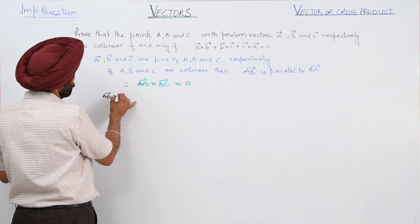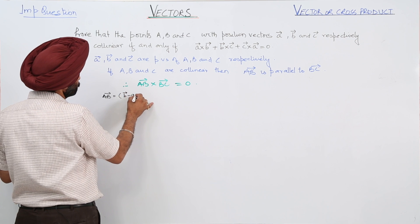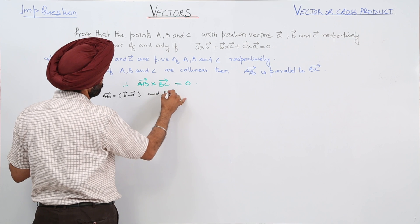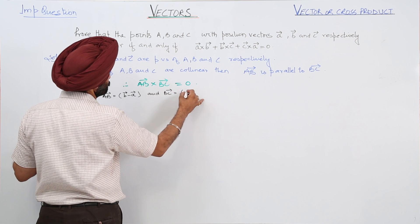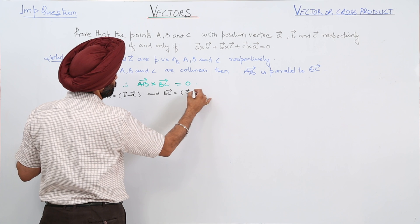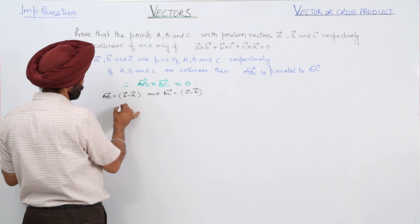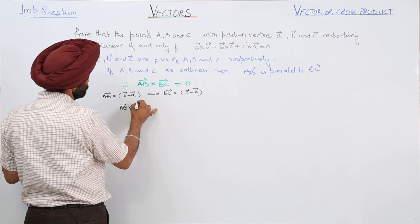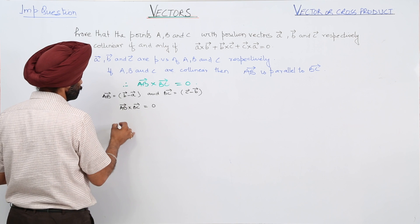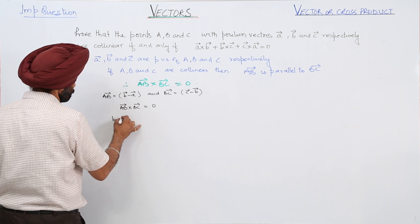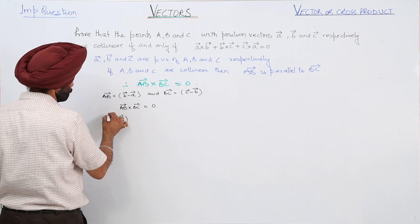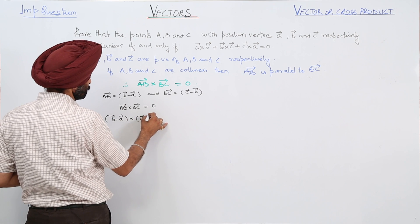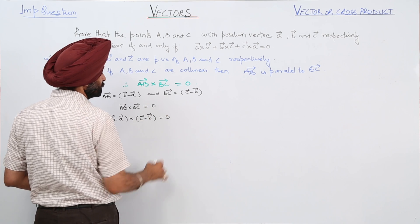Now, vector AB is the position vector of B minus position vector of A, and vector BC is equal to position vector of C minus position vector of B. So, vector B minus vector A cross vector C minus vector B is equal to zero.